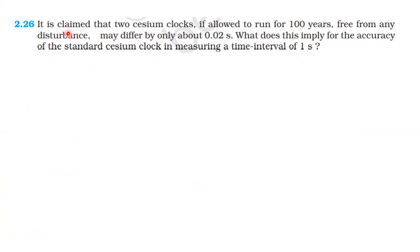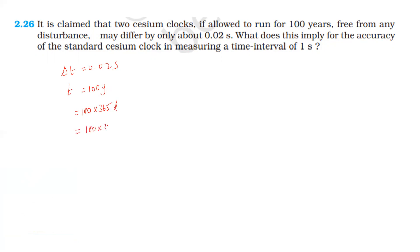For cesium clocks running 100 years, the difference between two clocks is 0.02 seconds. So the error in time is 0.02 seconds over 100 years. Converting: 100 years equals 100 times 365 days. One day equals 86,400 seconds, so 1 day equals 86,400 seconds.